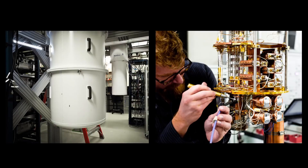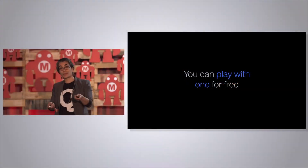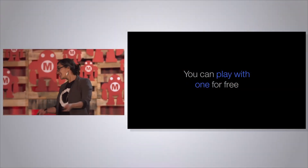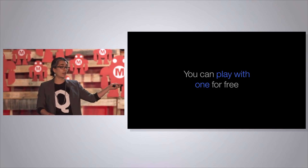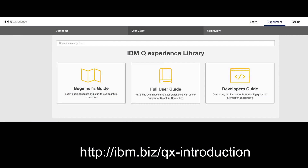This is what it looks like in the actual lab. These giant white cylinders are our dilution refrigerators, and here you can see my friend Nick working on the inside of the quantum computer. You can play with one for free today at our booth, or when you go home you can play with an actual quantum computer — we've hooked up a five-qubit quantum computer in the lab through those microwave cables, up out of the fridge, through the internet, available to you at this website for free.